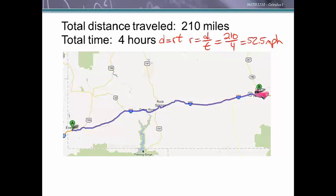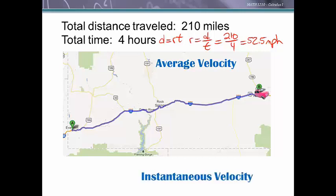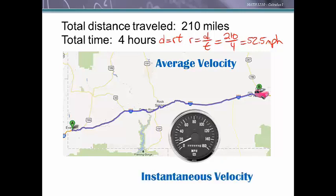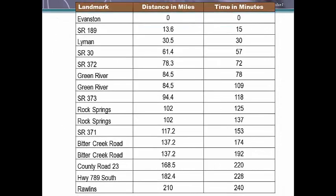If you were trying to figure out how fast you were going on the trip, average velocity would be what we computed — 210 divided by 4. But we may be interested in instantaneous velocity, which is what the speedometer would have been reading at any given instant. That's not 52.5 miles per hour for the whole trip. To get a better idea of what was going on, we could look at a table of values recorded starting in Evanston at time zero and tracking our progress.